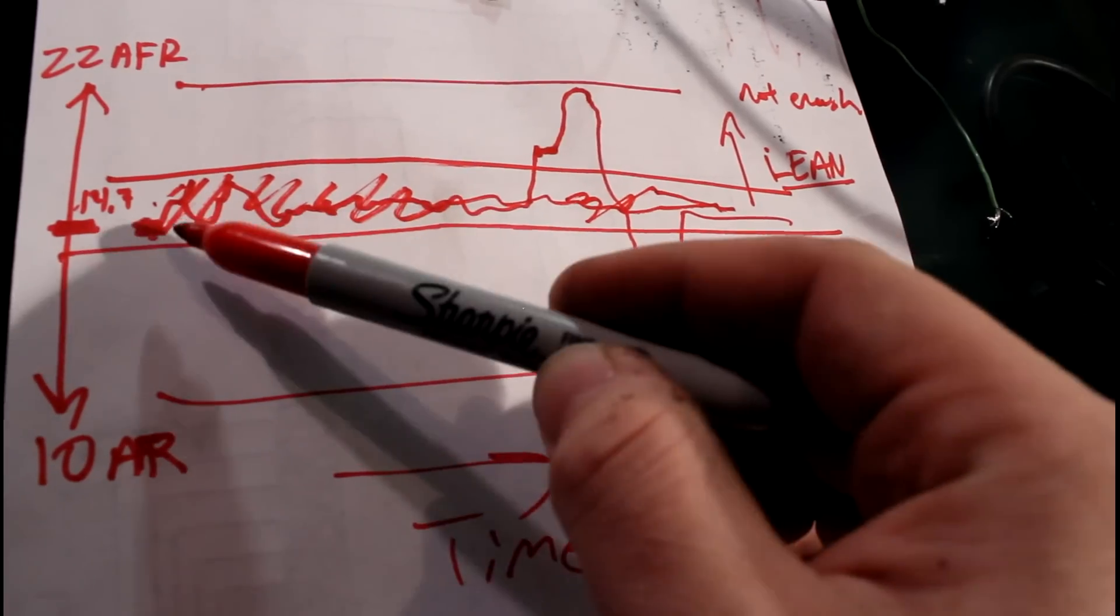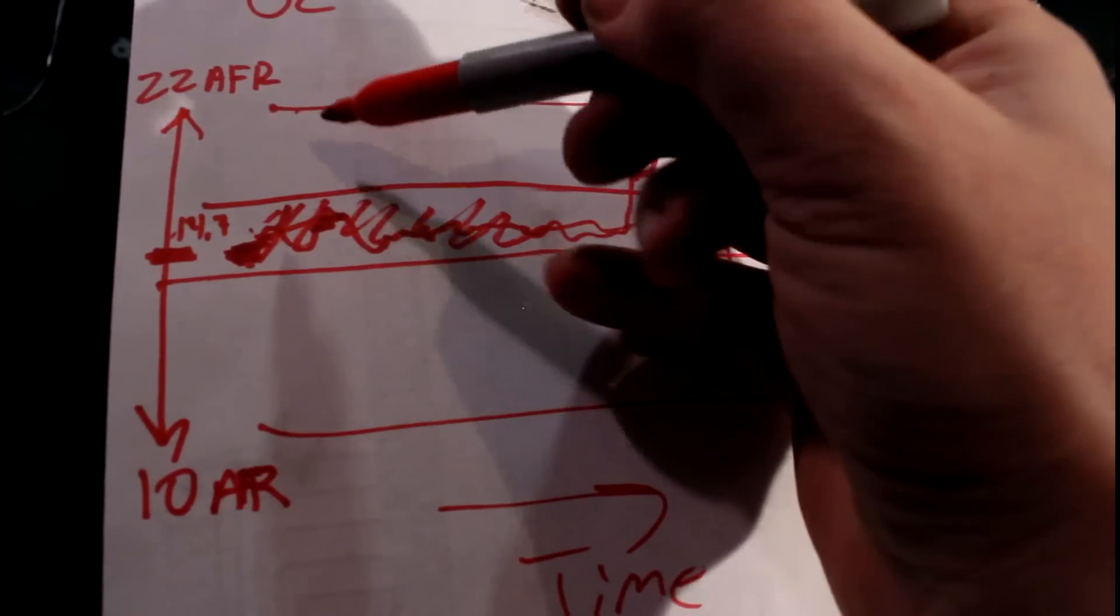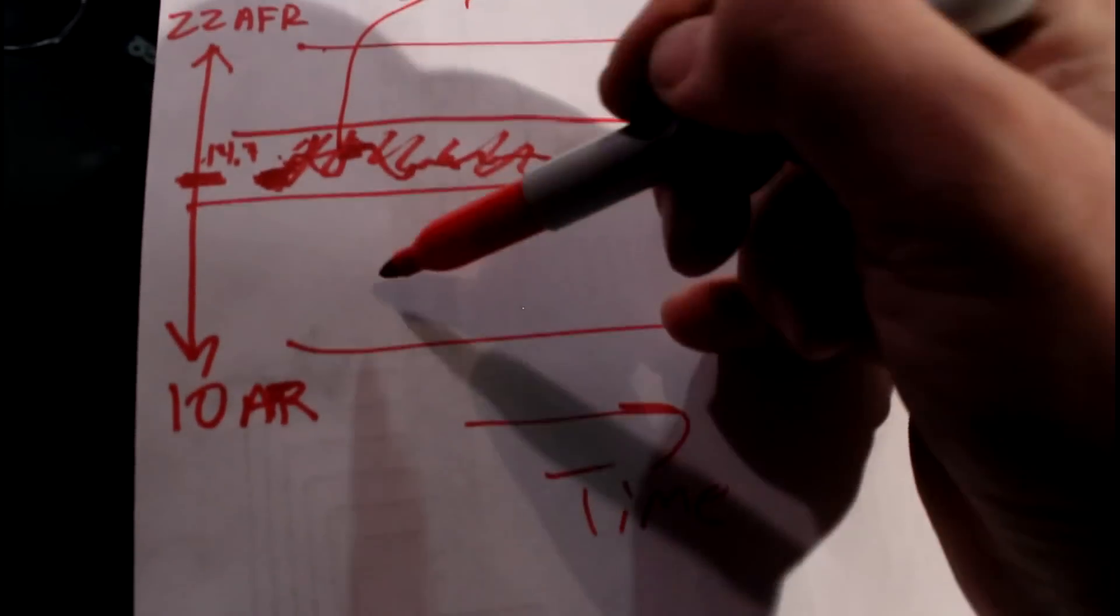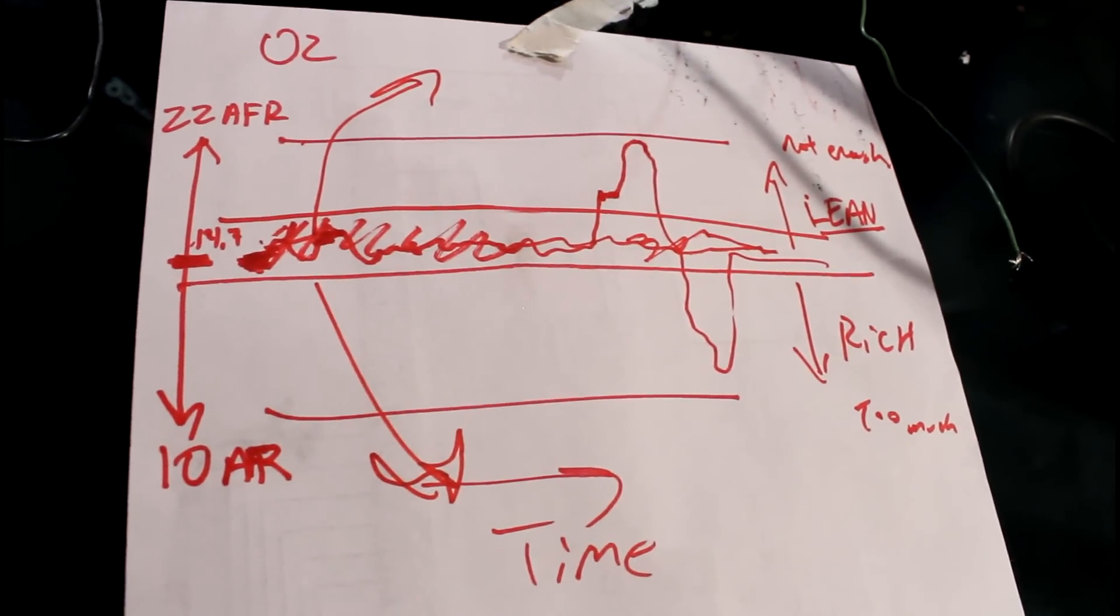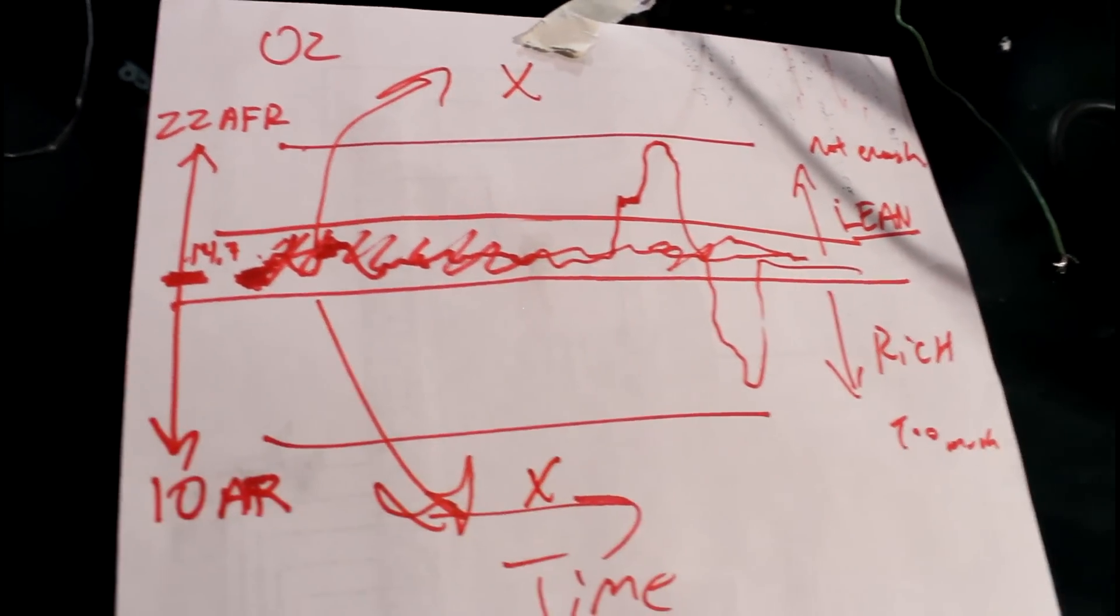So a narrowband sensor is only really capable of reading a band right near 14.7. And so you can tell if you're at 14.7 essentially or if you are way off on one side of it or way off on the other. And so basically the sensor is only going to report here or here pretty much all the time.